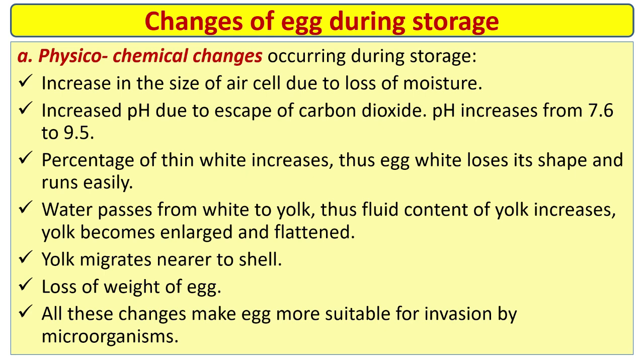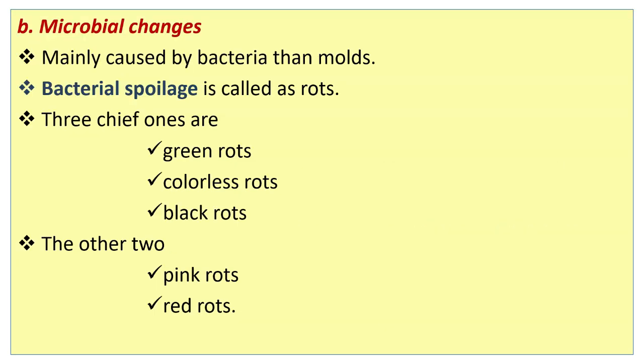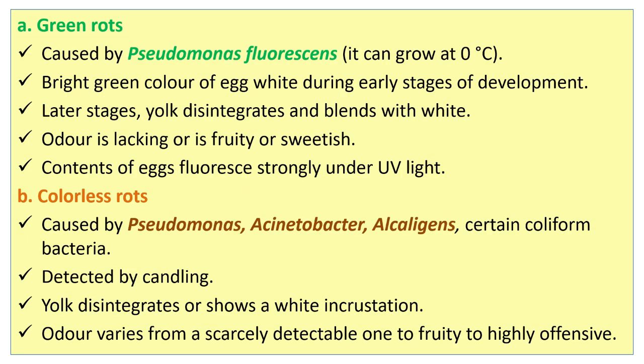Microbial changes are mainly caused by bacteria and molds. Bacterial spoilage is called rots. Three chief ones are green rots, colorless rots, and black rots. Other two types are pink rots and red rots. Green rots of egg are caused by Pseudomonas fluorescens.